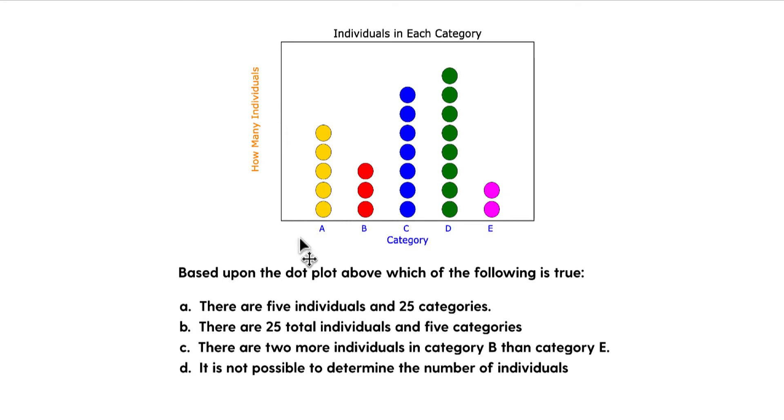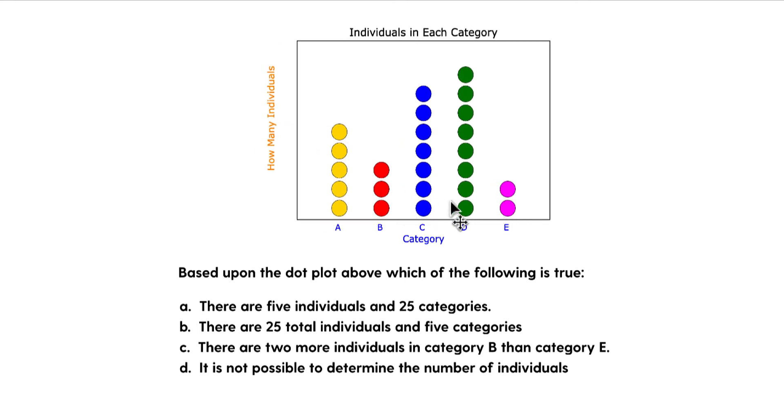If we look at these questions here, it says A is there are five individuals in 25 categories. Well, no. If we look at B, it says there are 25 total individuals in five categories. So yes, if you were to add up all of these, each one of these dots represents an individual and there are 25 individuals. And so this one sounds correct.